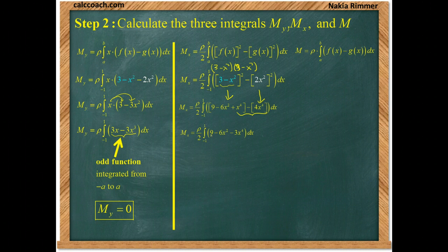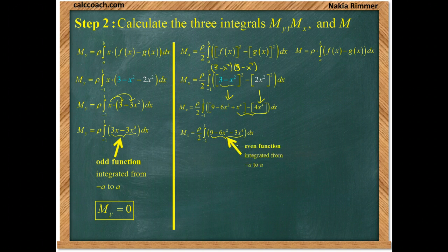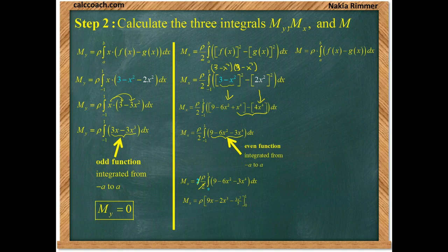And we're going from negative 1 to 1. Negative 1 to 1, alarms go off. Check the function on the inside. See if you can figure out the nature of it. And this is an even function. When you have an even function from negative a to a, then instead of having negative 1 as a lower limit, what we can do is double and have 0 as a lower limit. Same integrand. And what's nice about that is the doubling will cancel with the division by 2 here from the formula. Find the antiderivative of each, 9x. Now, here we're going to get x cubed over 3, so that's minus 2x cubed. And then, minus 3x to the fifth over 5. And we're going from 0 to 1. And just the rho is on the outside now.